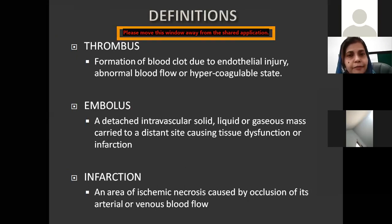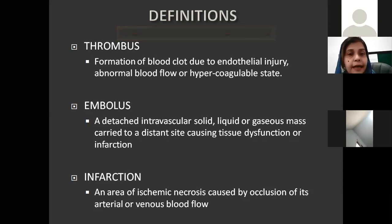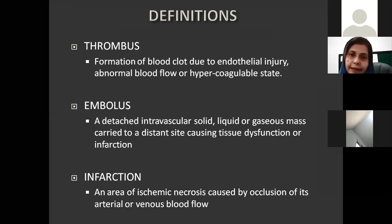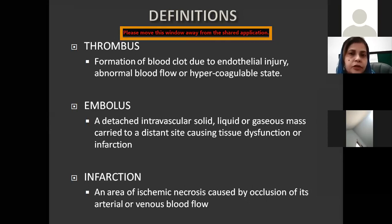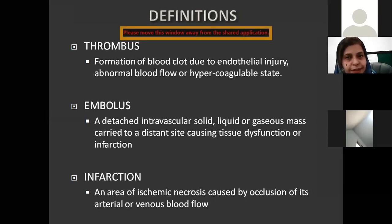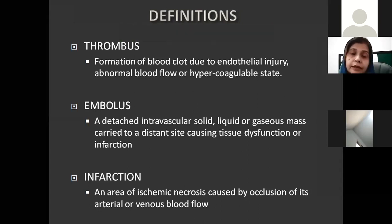Whenever there is an imbalance between the normal mechanisms, there is a chance that blood is going to clot. Then, what is an embolus? An embolus is a detached or fragmented part of a thrombus. It could be either a solid mass, a liquid, or even a gas, and it is carried from its site of origin to a certain organ or smallest vessel where it causes obstruction or occlusion of the blood supply. Then we have infarction, which is that particular organ or tissue whose blood supply is obliterated by either a thrombus or an embolus. So these three terms are interconnected and interrelated.